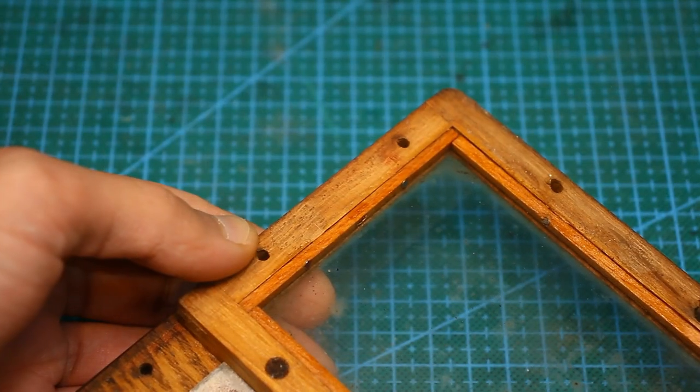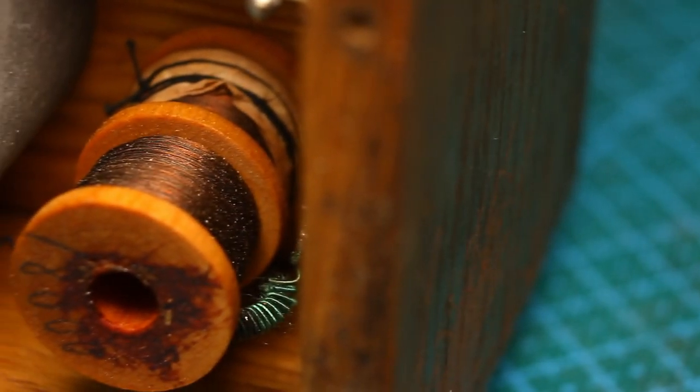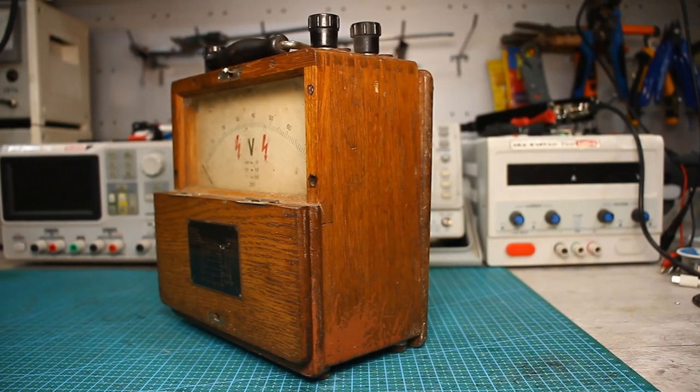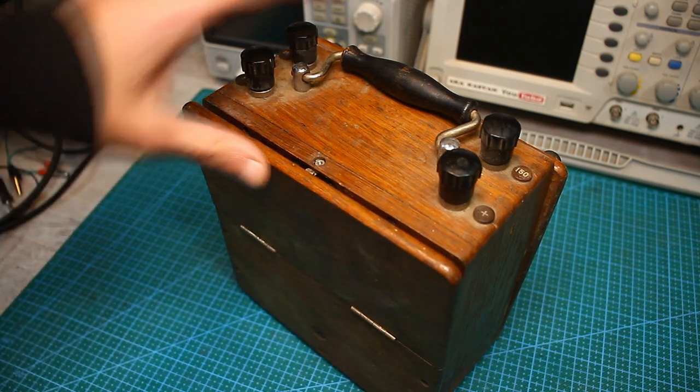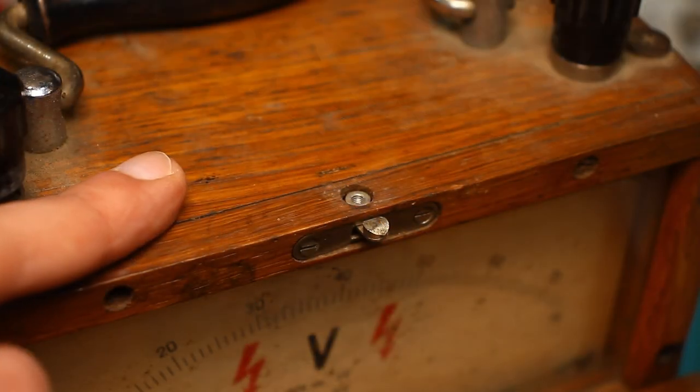Of course, the device is valuable, at least because it's completely handmade. The device has a pointer type indicator, a convenient handle for transportation, as well as a side cover to protect the measuring head. There is also a small lock.